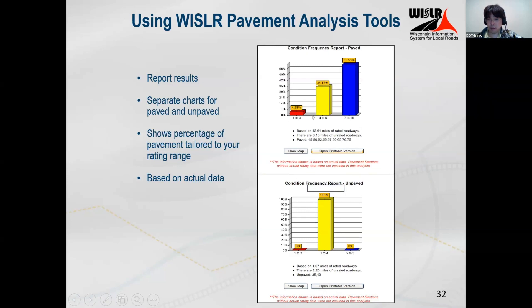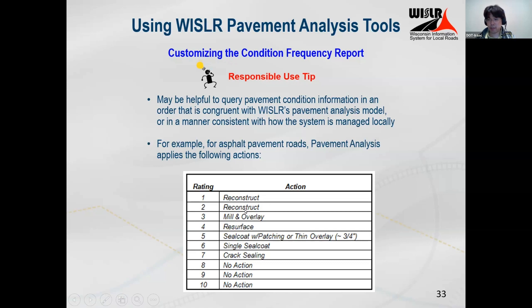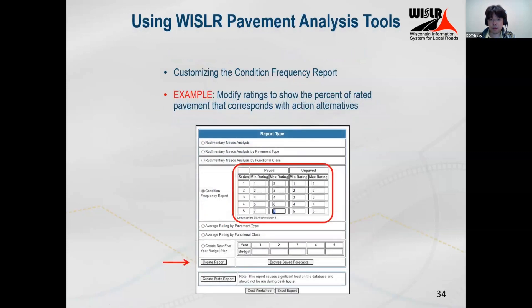Here's what it looks like when you run it with only three bars — one for one to three, one for four to six, and one for seven to ten. This is helpful if you don't want too much granularity. It's a little easier to see that, say, 61% of your roads are in pretty good condition without doing mental math to group the ratings together.